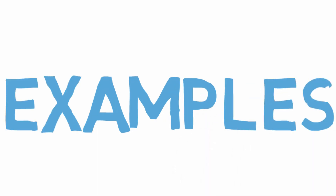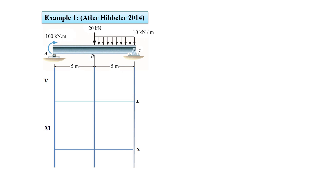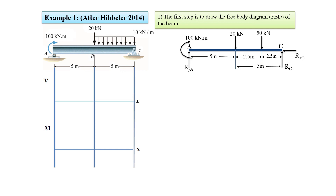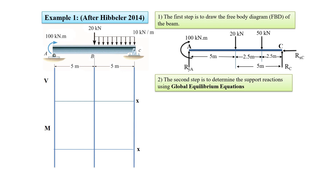Now we're going to look at an example. Let's draw the shear and moment diagrams for the following beam. We have a simply supported beam where one side is pinned and the other end is roller supported. The first step is to draw the free body diagram of the beam. Linear distributed loadings produce a resultant force equal to the area under the loading diagram — in this example, 10 times 5 equals 50 kilonewtons — located at the centroid of that area, which is at 2.5 meters. Note that at point A we have a concentrated moment of 100 kilonewton meters.